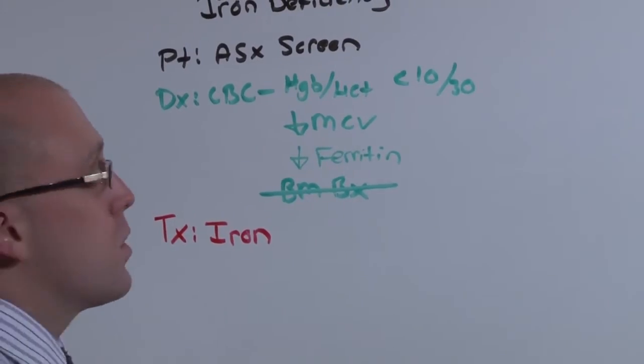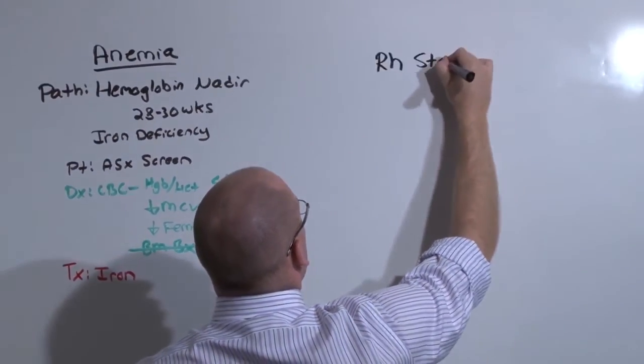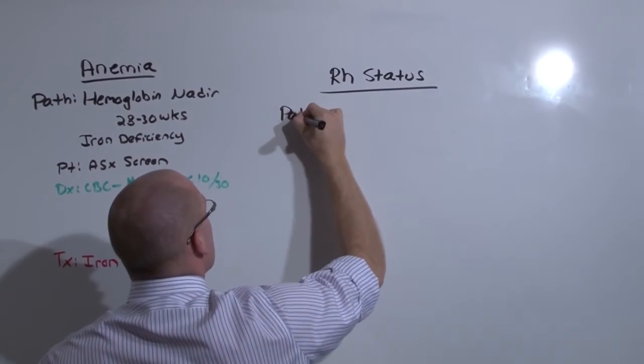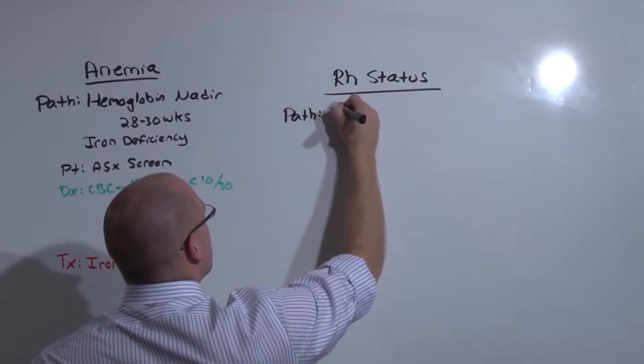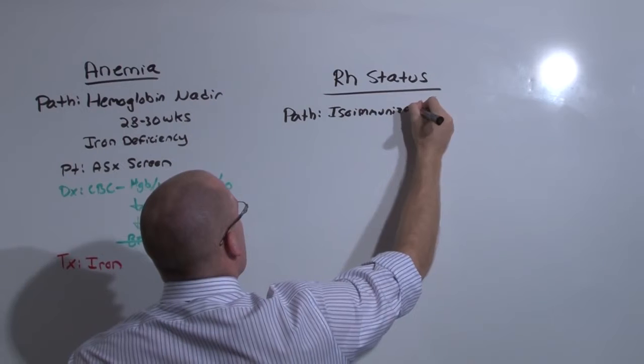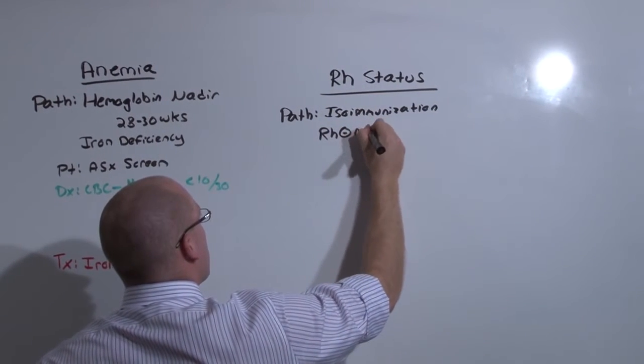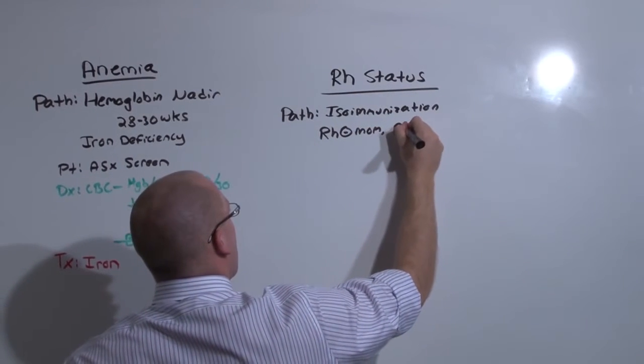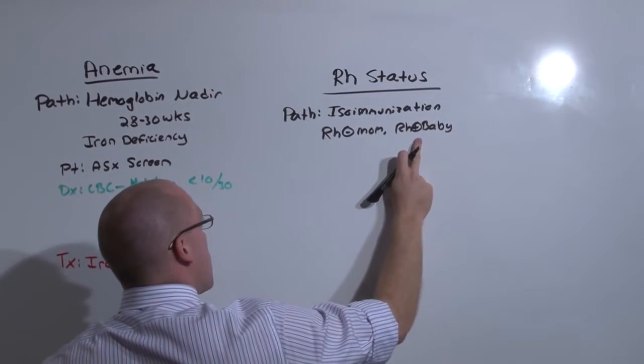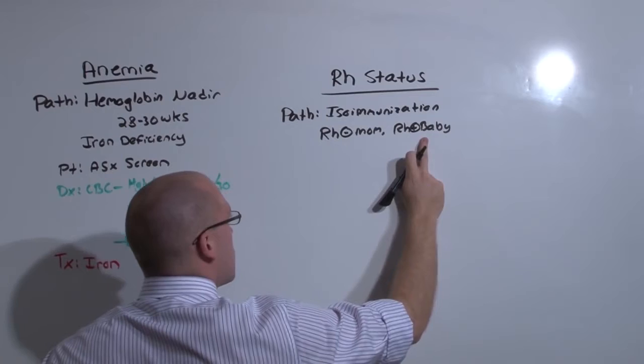Let's finish with RH isoimmunization. Now, we have a whole lecture in the OB section about isoimmunization. Essentially what happens in isoimmunization is that an RH negative mom has an RH positive baby.